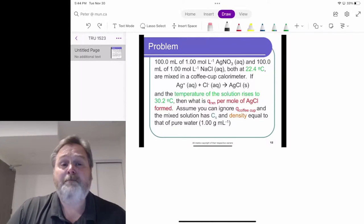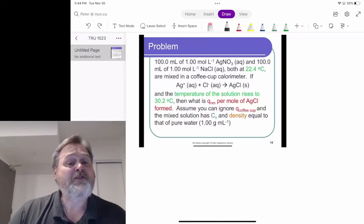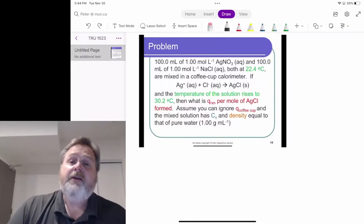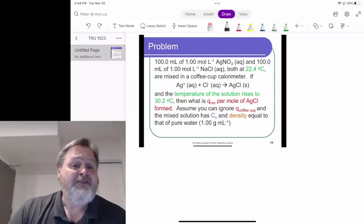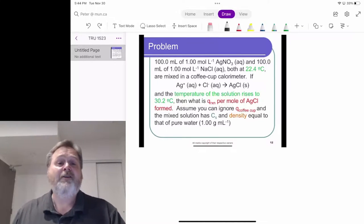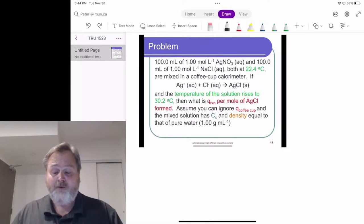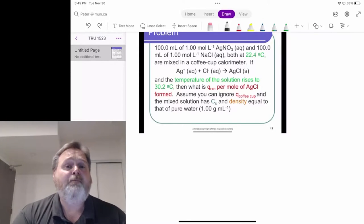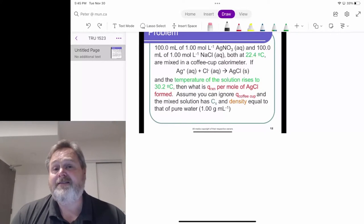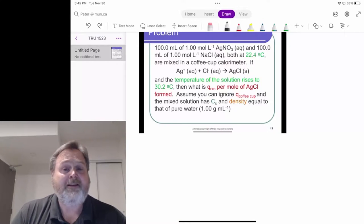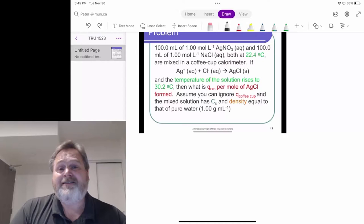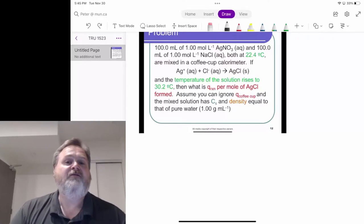I'd first like to draw a picture of what's actually happening here so we can get a better sense. You're going to notice that I can't draw but it doesn't matter. It's really about organizing our thoughts. We're taking 100.0 milliliters of a 1.00 mole per liter silver nitrate solution and 100.0 milliliters of 1.00 mole per liter sodium chloride, both at room temperature, 22.4 degrees Celsius.